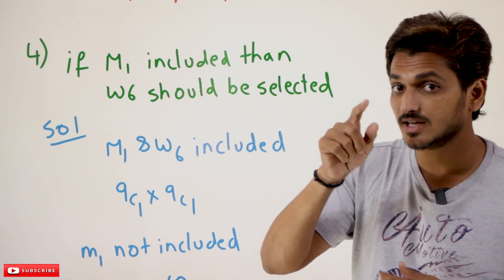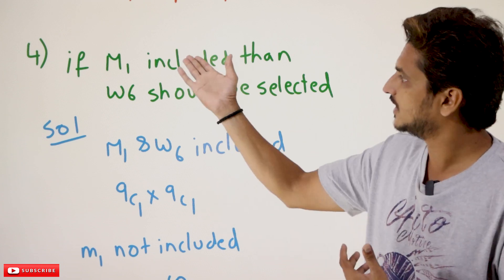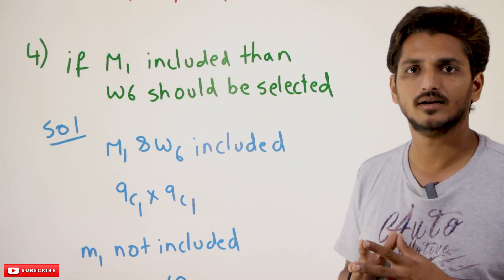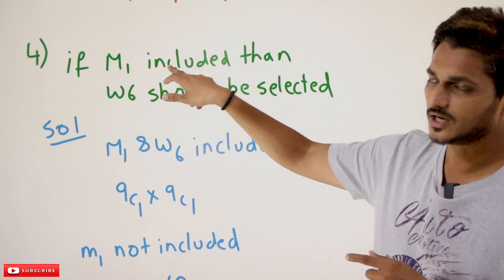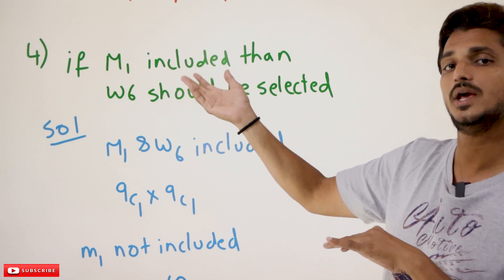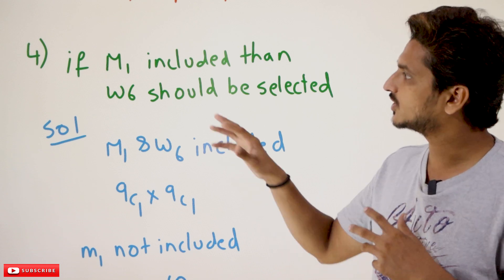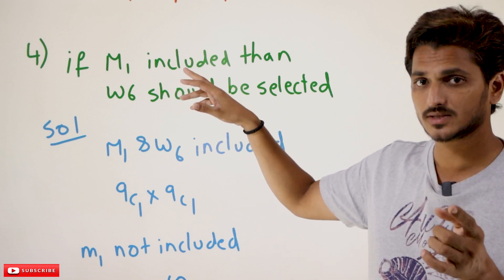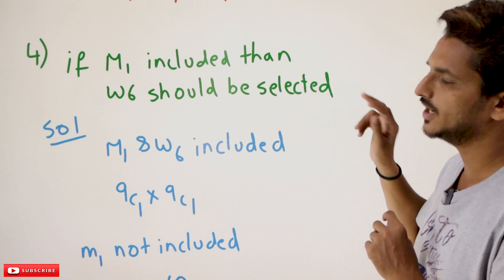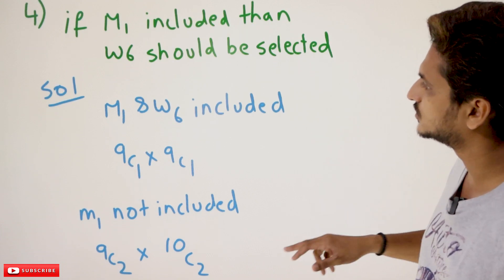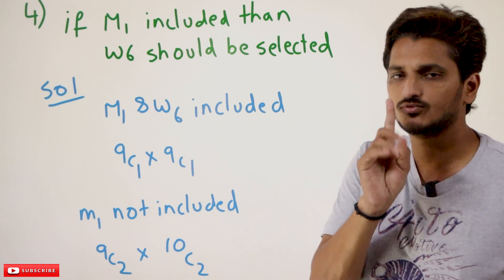In our discrete mathematics, in the first videos, we discussed this mathematical logic of if-then. If this happens, then this should happen — W6 should be included. If M1 does not happen, you may not include W6; it is up to you and is not a condition. You have to choose four members: two men and two women should be there, plus the condition: if M1 is included, then W6 should be included. Now write out the different possibilities. Possibility one: choose M1 and W6.